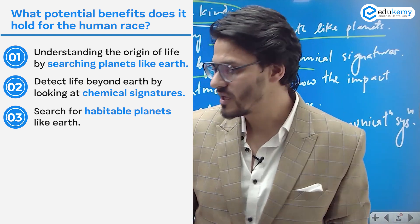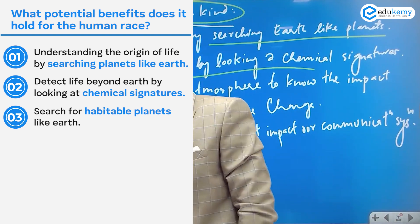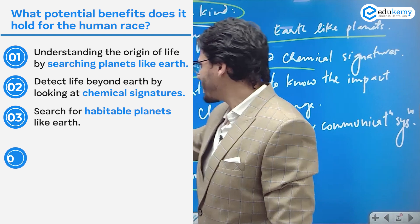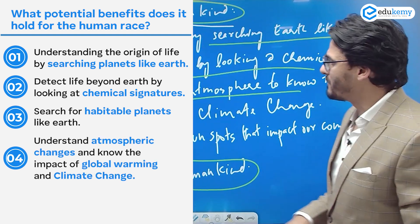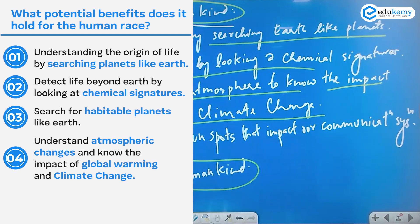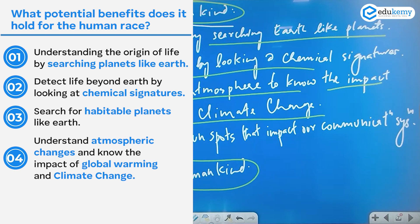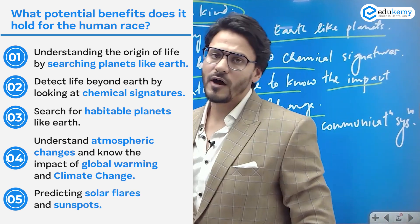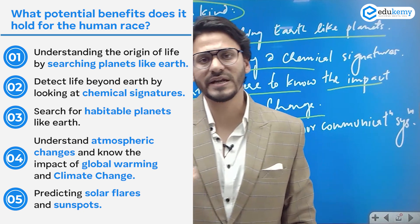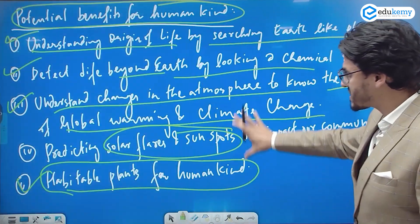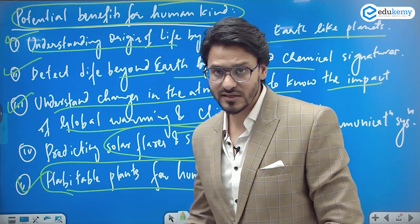Finding habitable planets will help us become a multi-planetary species — a goal central to companies like SpaceX. Another key benefit is understanding changes in the atmosphere to assess the impact of global warming and climate change. Finally, the telescope can help predict solar flares and sunspots, which affect our communication systems.